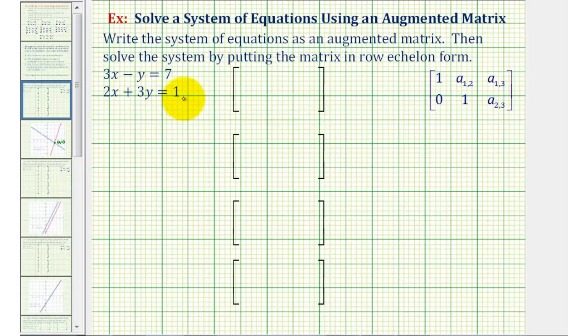Since the equations are in standard form, meaning the x terms and y terms are on the left and the constants are on the right, we can go ahead and form the augmented matrix. Using the first equation, the first row of our matrix will be three, negative one, seven. The second row will be two, three, one.